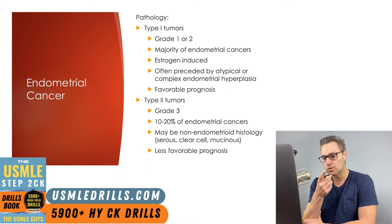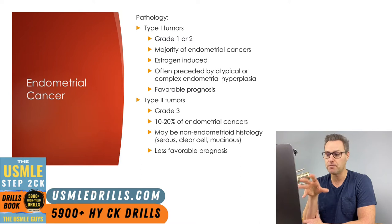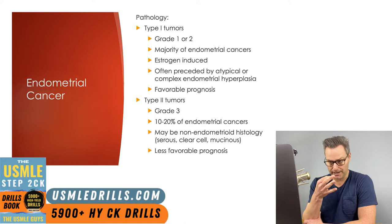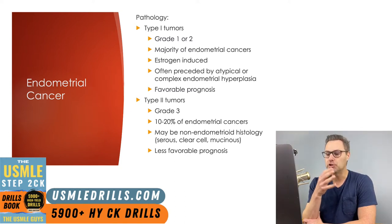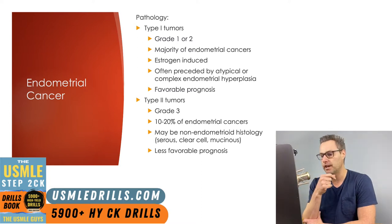Type 1 tumors typically have a more favorable prognosis. The less common and less favorable type of endometrial cancer are type 2 tumors. These are grade 3, or they may have a non-endometrioid histology — so they can be serous, clear cell, mucinous, among other histologic types.